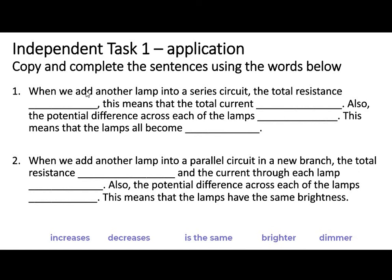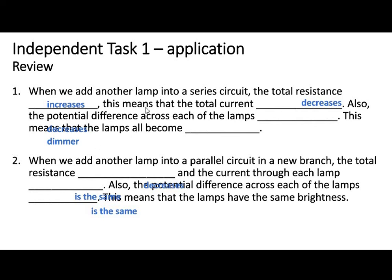Here's another independent task: copy and complete these sentences using the words provided — some may be used more than once, some not at all. Pause the video and have a go, then check your work. In series: resistance increases and current decreases, so potential difference across each lamp decreases and lamps become dimmer. In parallel: total resistance decreases, potential difference across each lamp stays the same, so brightness remains the same.